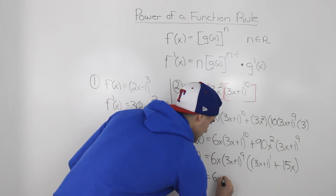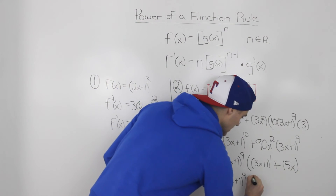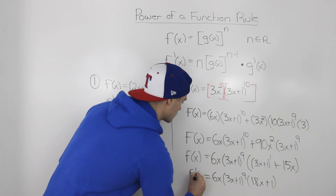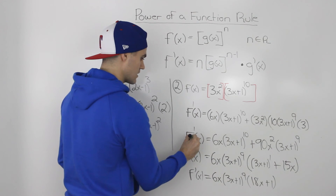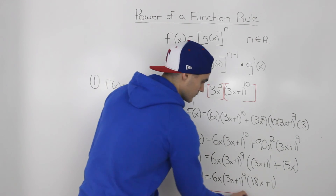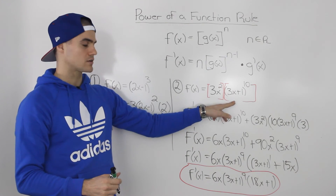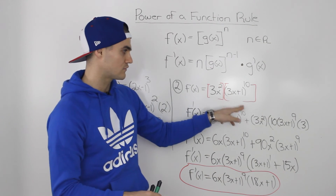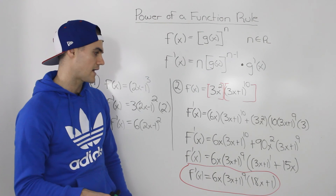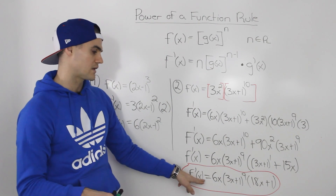So we have 6x · (3x + 1)^9 factored out, and inside the bracket we simplify: 3x + 15x gives us 18x, and then the + 1 stays as is. So the final answer — f'(x) — is 6x(3x + 1)^9 · (18x + 1). The key point is that we applied the product rule on this function, and within the product rule, when finding the derivative of the second function, we had to apply the power of a function rule. The algebra to simplify is always a headache, but this is the final derivative.